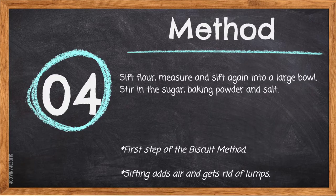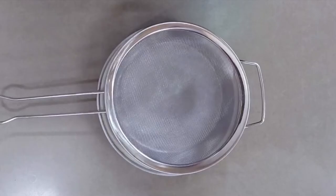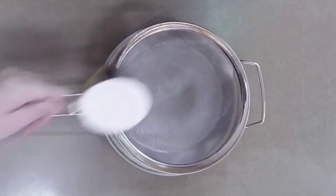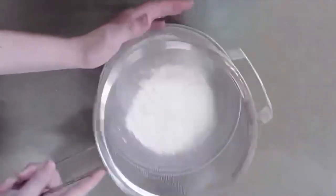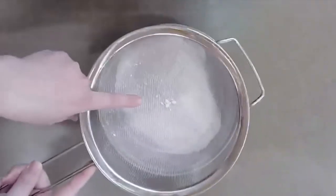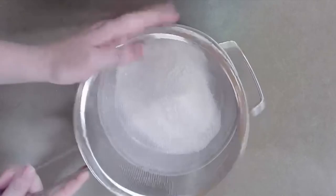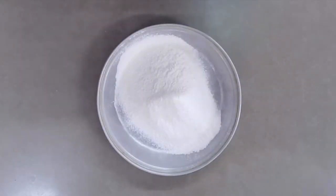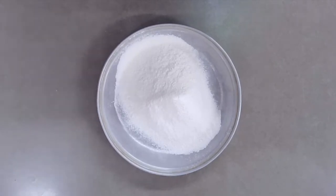Step 4: Sift flour, measure, and sift again into a large bowl. Stir in the sugar, baking powder, and salt. Sifting adds air and removes lumps. We sift flour for two reasons: to remove any lumps and to add air pockets, which are important for a successful rise. Creating air pockets within our flour helps the carbon dioxide travel through the dough rapidly, causing a rapid rise.